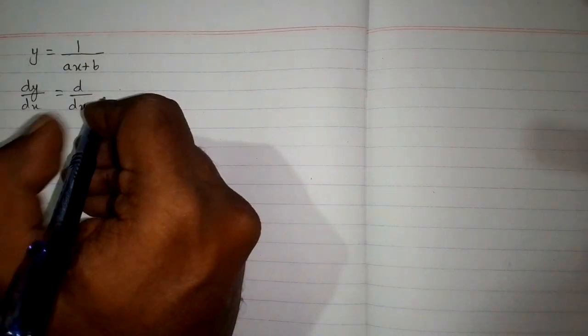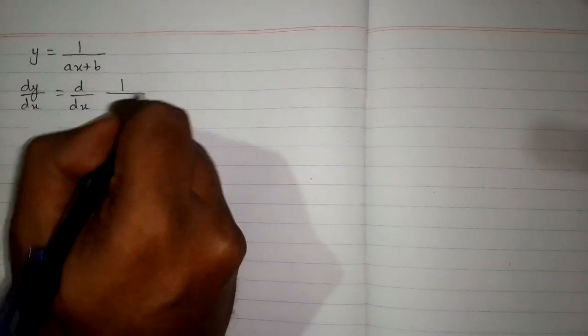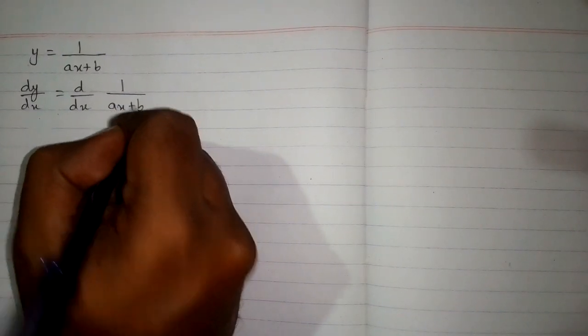In this video we will find the derivative of y = 1/(ax + b). First we will take the derivative of both sides, so we have dy/dx equals d/dx of 1/(ax + b).